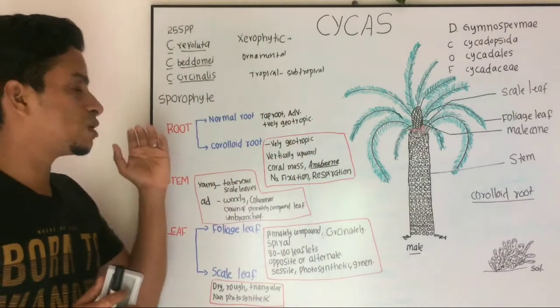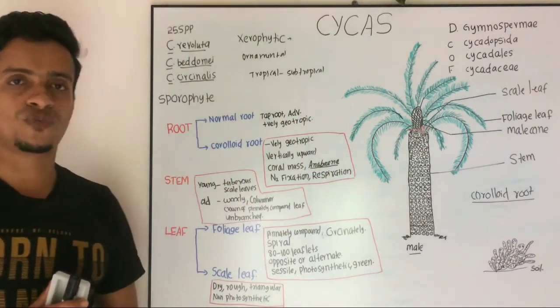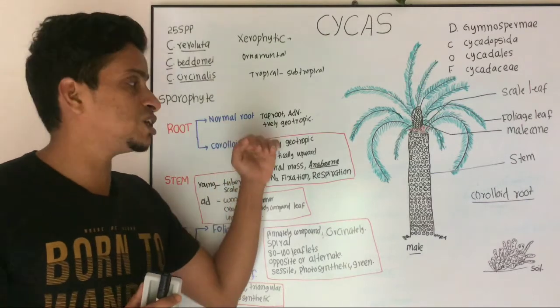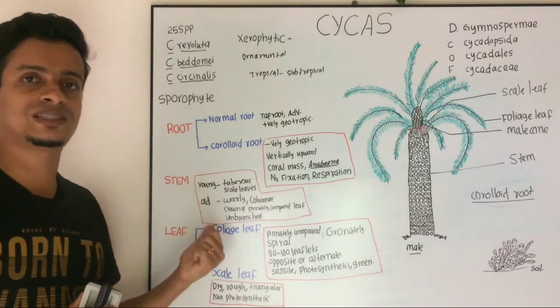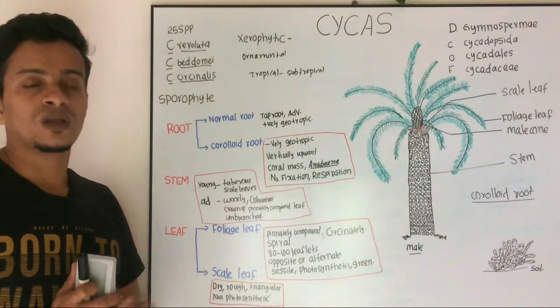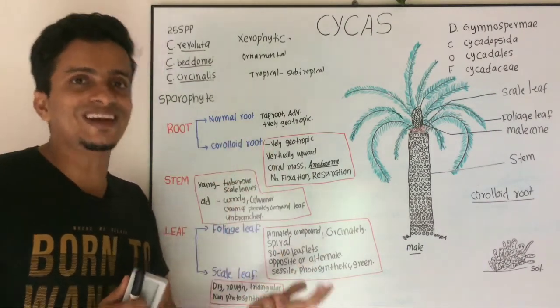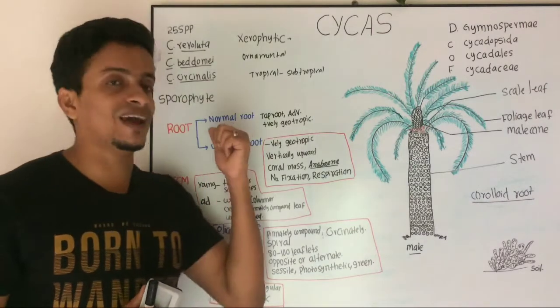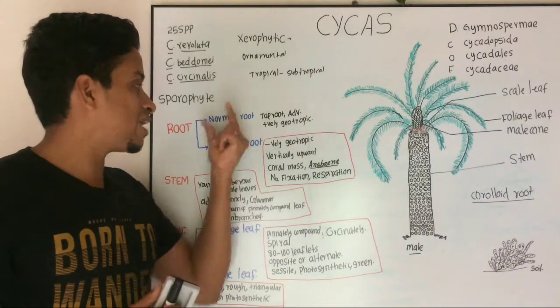The morphology of the sporophyte: it is differentiated into root, stem, and leaf. First of all, root. Root is again divided into two types: they are normal root and coralloid root.